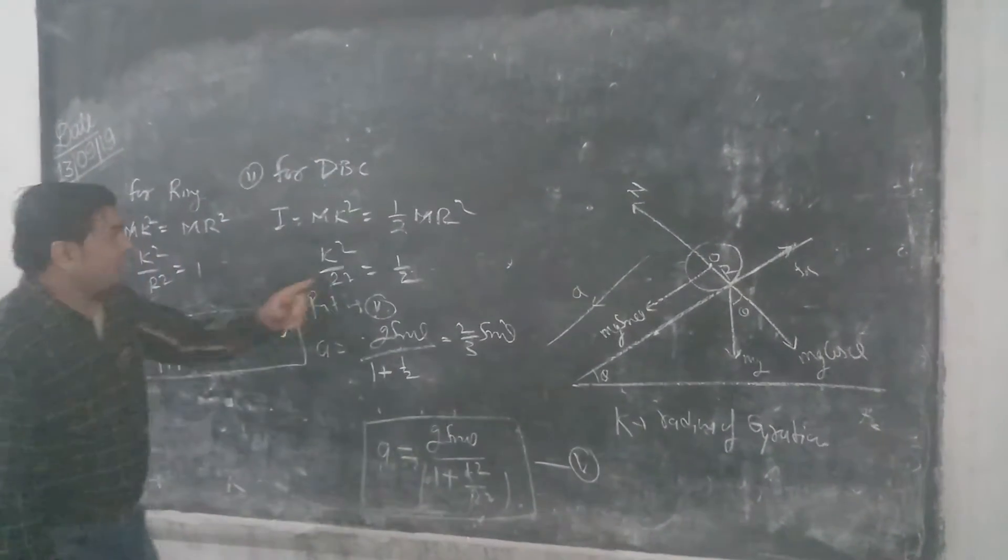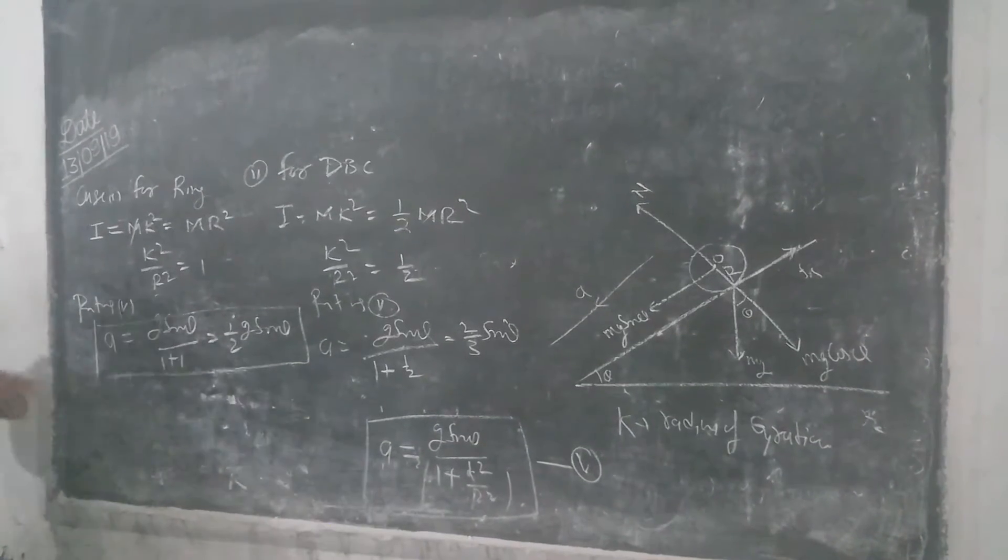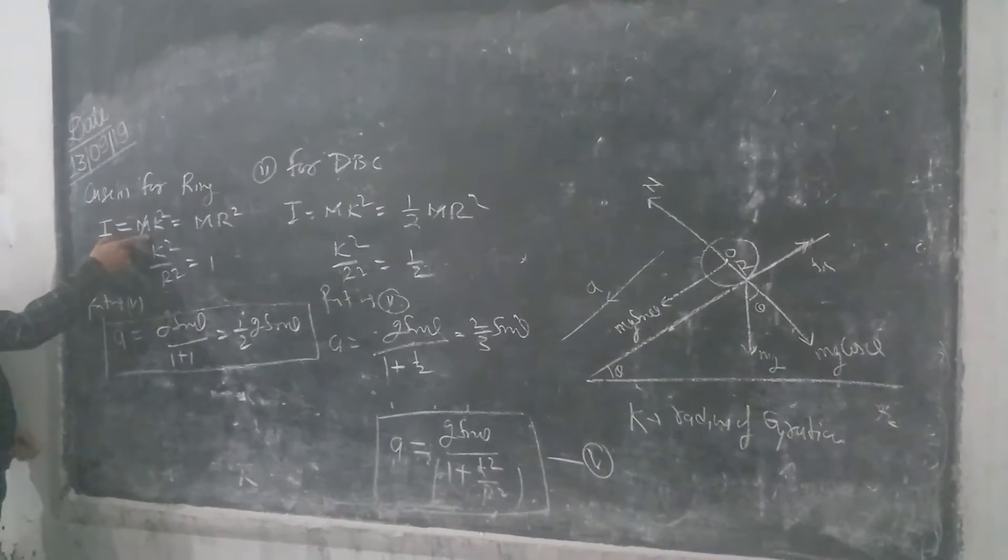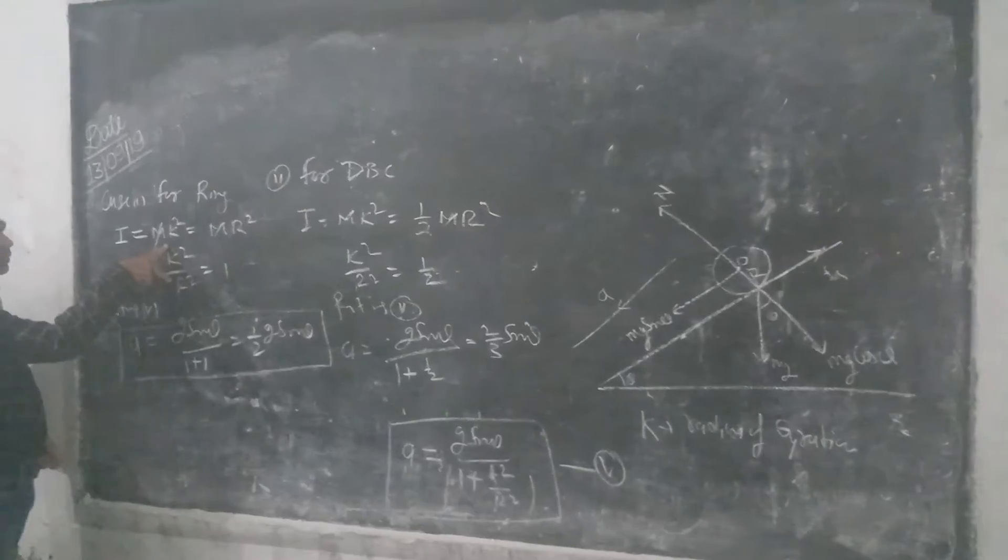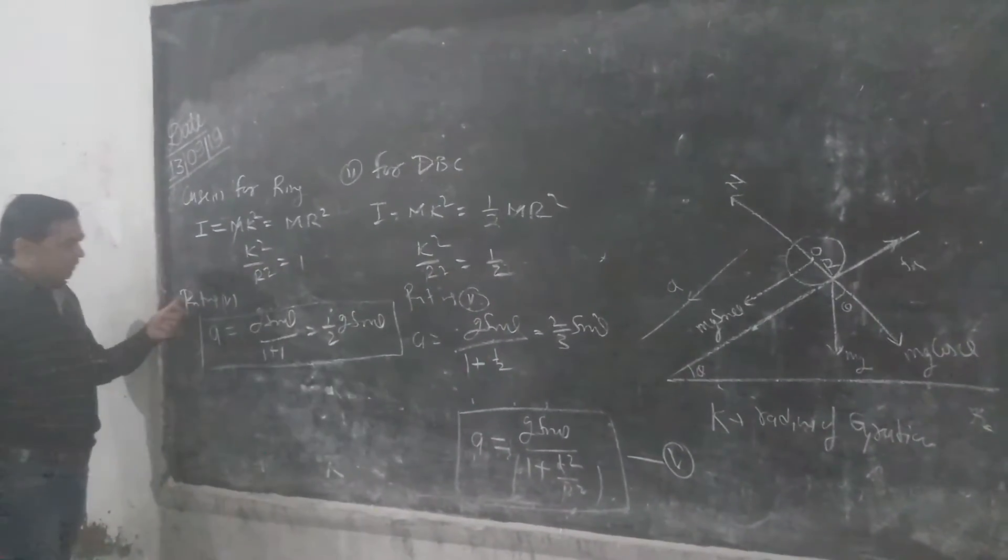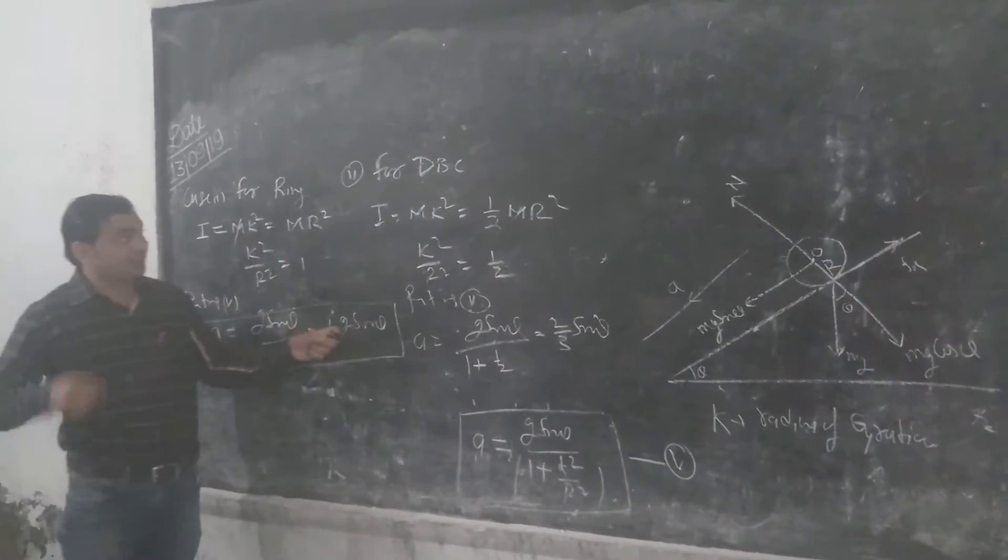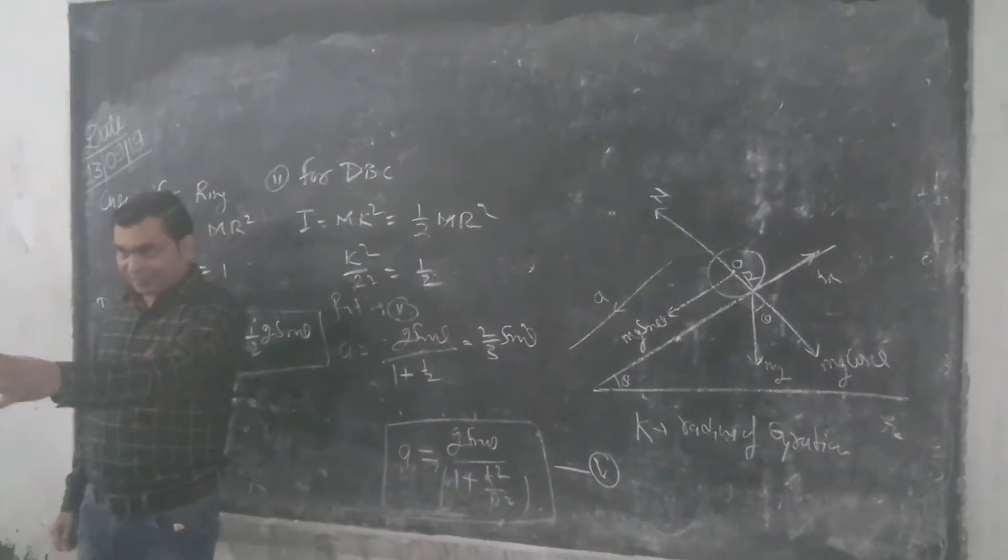For a ring, or case first, the general formula is moment of inertia I, mk square equal to mr square. After calculation, that gives us 1, put the value, find half g sine theta. Similarly for this case,